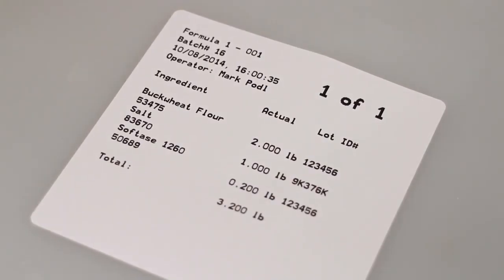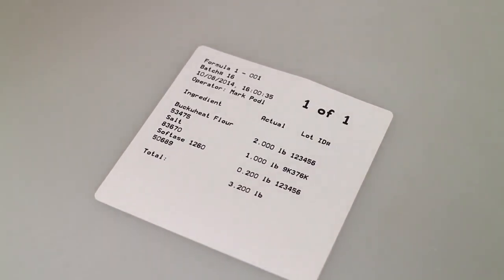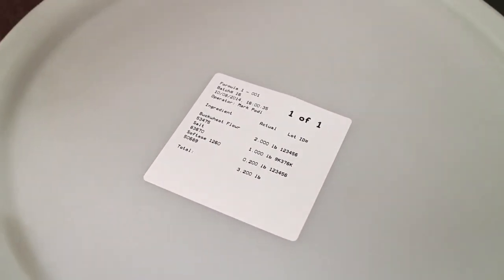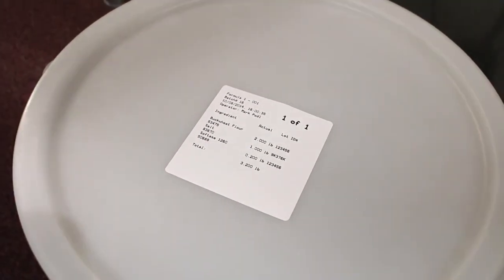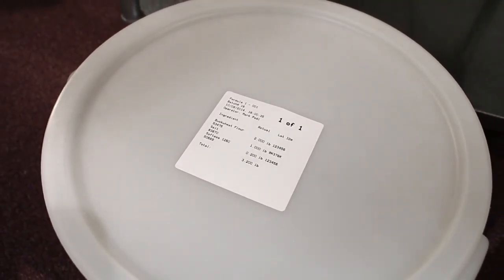This label can be put onto the container to label the contents with not only the ingredients of the batch, but also information such as lot ID, operator name, date, and time. All of this can be used for verification purposes on the plant floor.